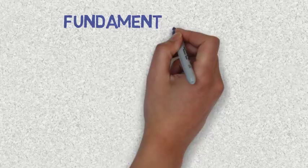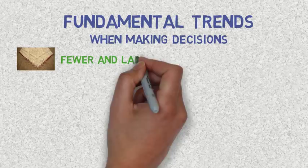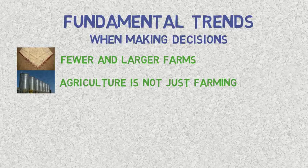Some trends must be taken into account in order to understand the environment in which businesses are conducted in the USA and in the world. The first trend is very noticeable: farm numbers continue to drop. The second consists in the fact that agriculture is no longer just farming. In fact, there are different industries that were created around farming, such as the storage industry.